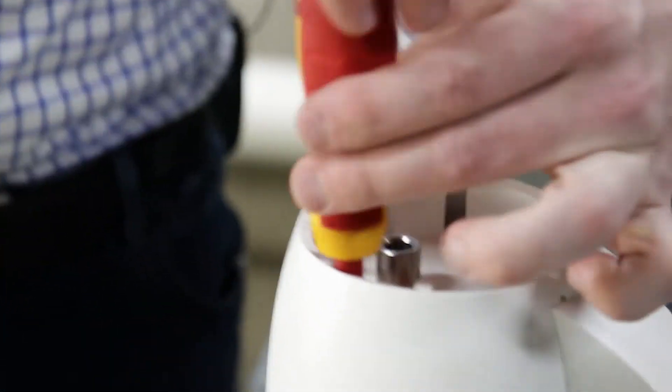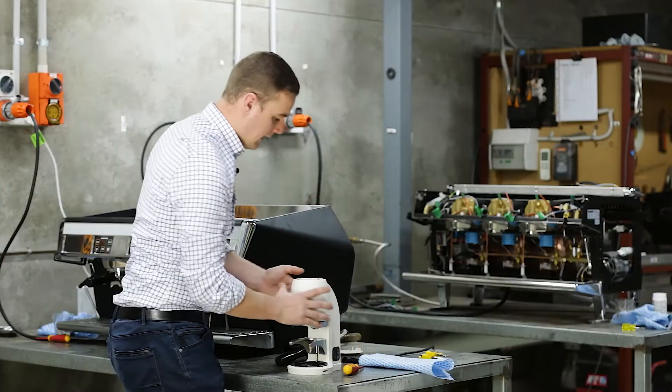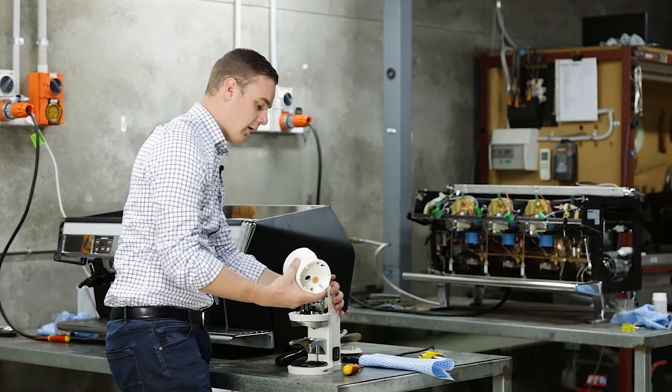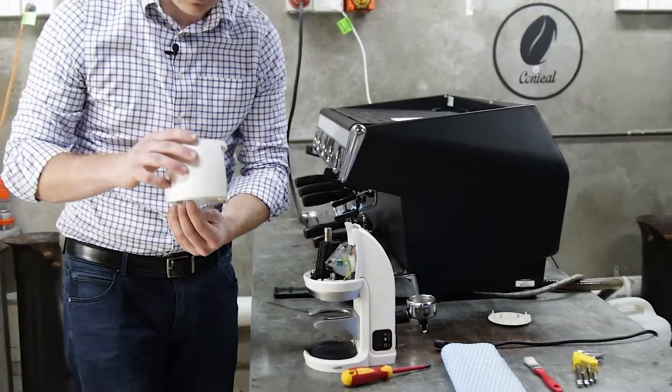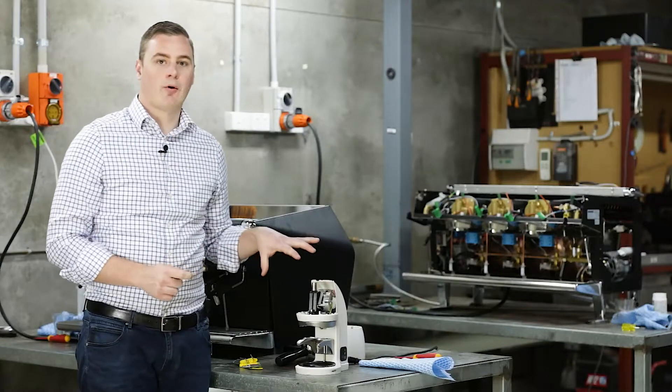So just undoing these screws. So now this whole front cover should just pop off like so. And you can just leave the screws in there, make sure you don't lose them. So now I've got the cover off.